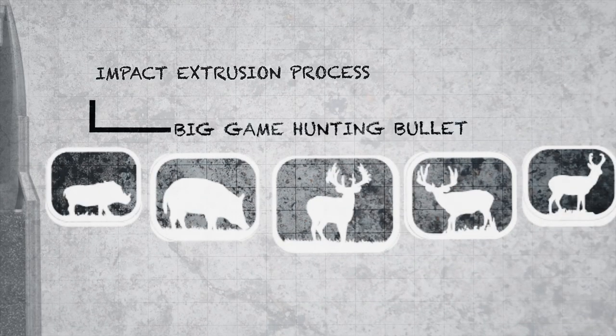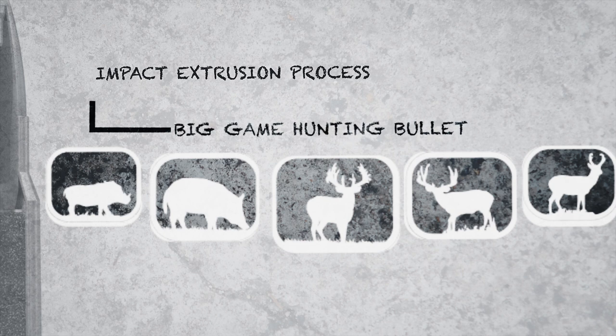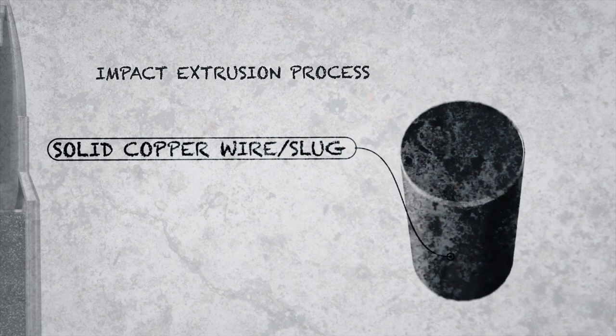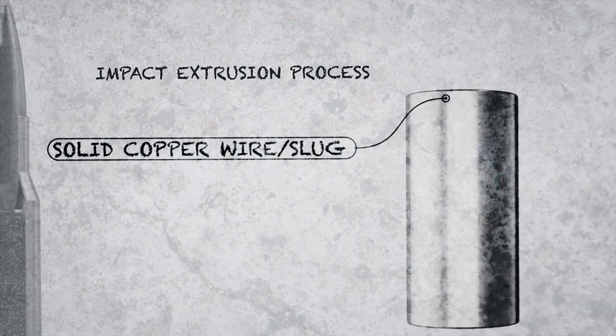But for a hunting bullet, you're going to want to use the impact extrusion process. Start out with this solid copper wire to make the jackets of the bullet. End up with a slug, and that's what we're going to use to make the jacket of the bullet.